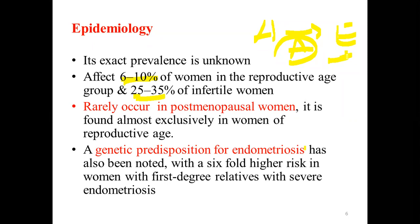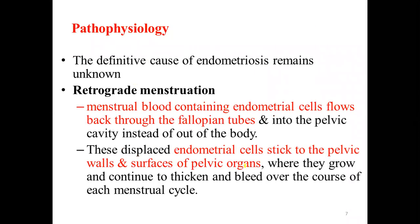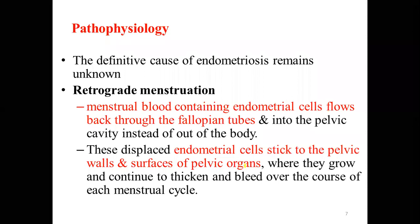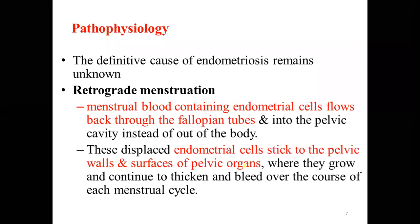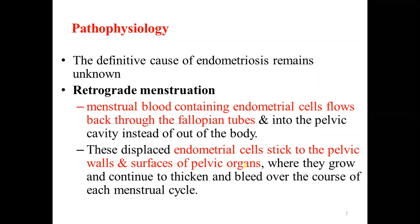There is also a genetic component: if someone has a first-degree relative with endometriosis, they have a six-fold risk of developing endometriosis during the reproductive age. Looking at the pathophysiology, the definitive cause of endometriosis remains unknown, but there are several theories that define the pathogenesis of this condition.